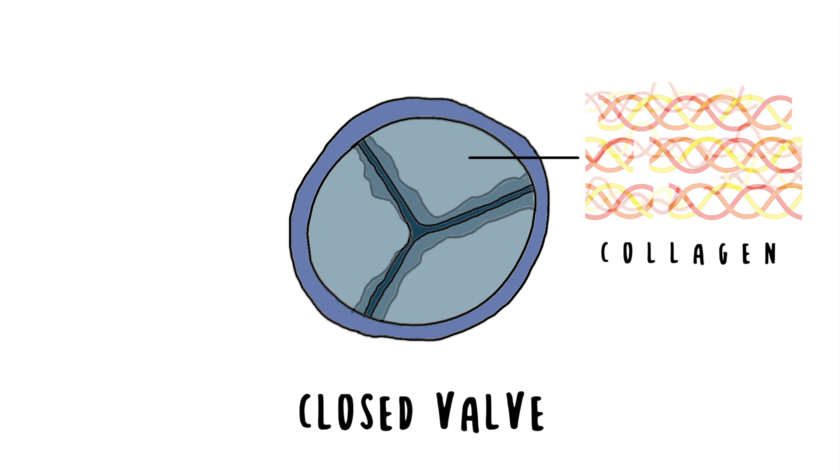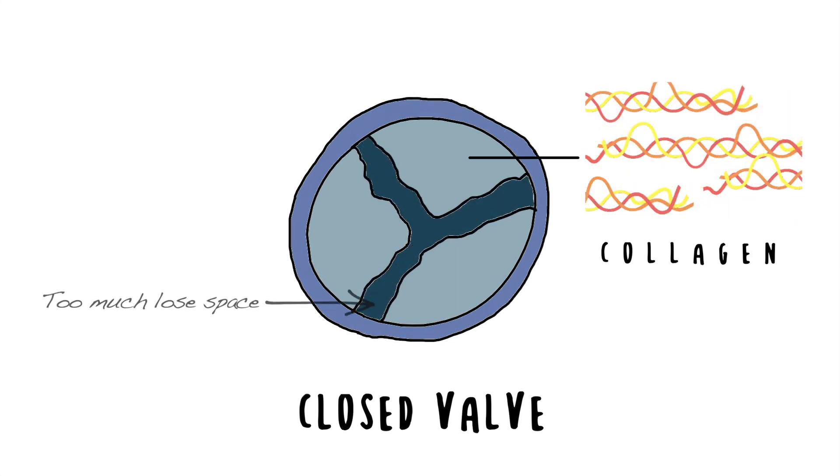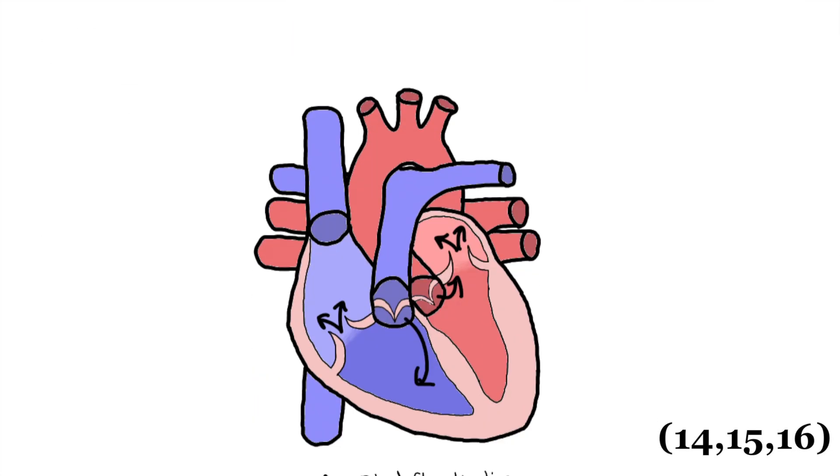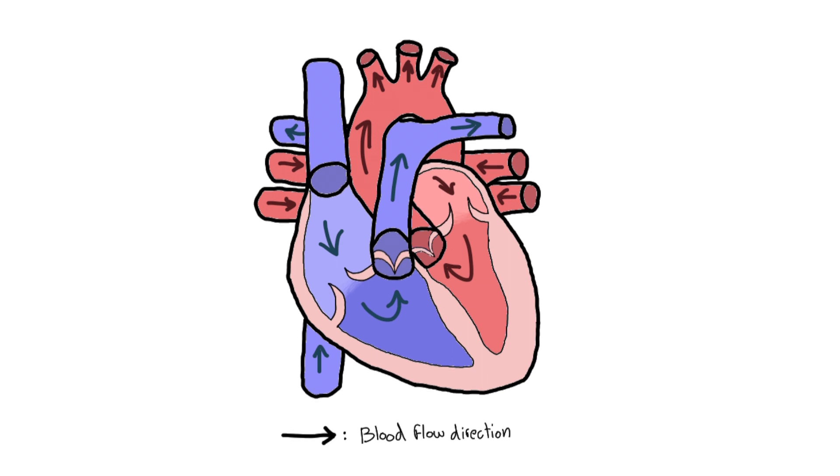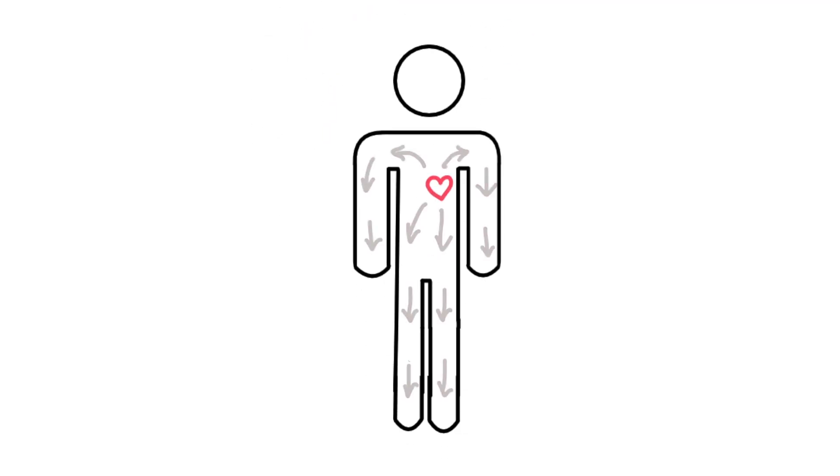In EDS cases, the defective collagen can cause the valves to be loose and weak. This can cause valvular regurgitation, where blood flow goes backwards instead of the normal one direction, forwards. The blood is thus not pumped well enough throughout the whole body to supply oxygen. This causes fatigue and shortness of breath, as the body is running out of oxygen. Over time, this can lead to the heart enlarging, causing heart failure.